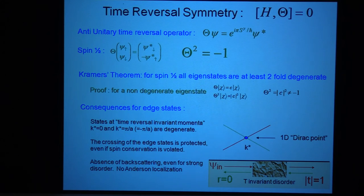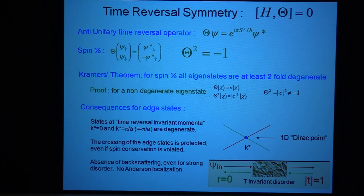If you have other spatial symmetries like a reflection symmetry, you can have degeneracies protected by a reflection symmetry. This is something people are currently discussing with topological crystalline insulators — they have edge states protected by reflection symmetry. But if you make them dirty, disorder violates the reflection symmetry. You're never going to have reflection-symmetric disorder, so that's the sense in which time reversal is more robust.